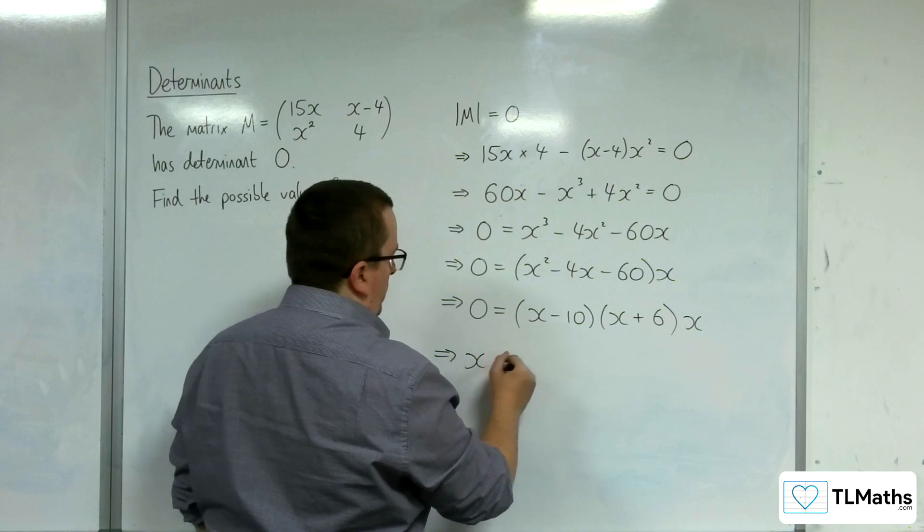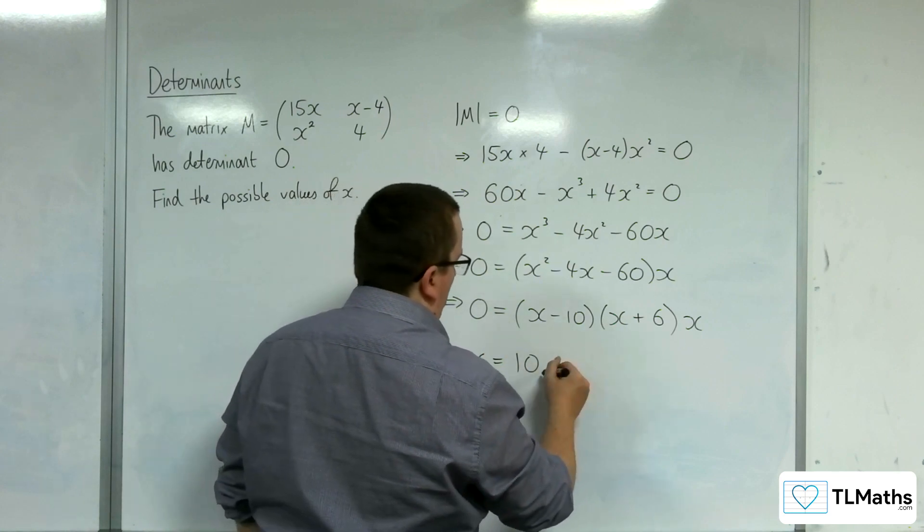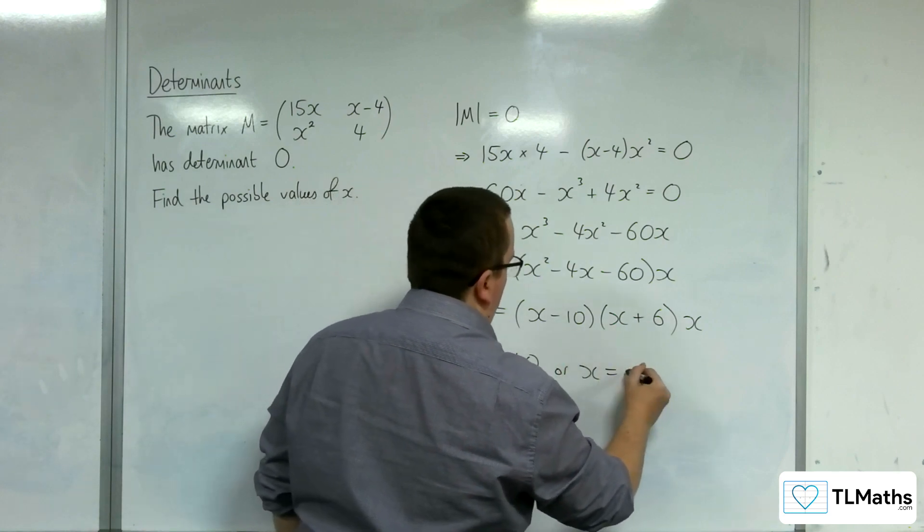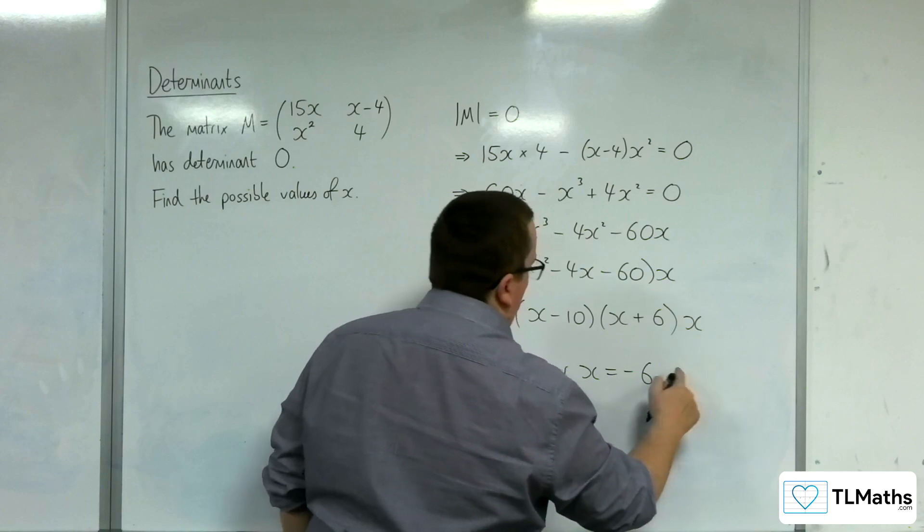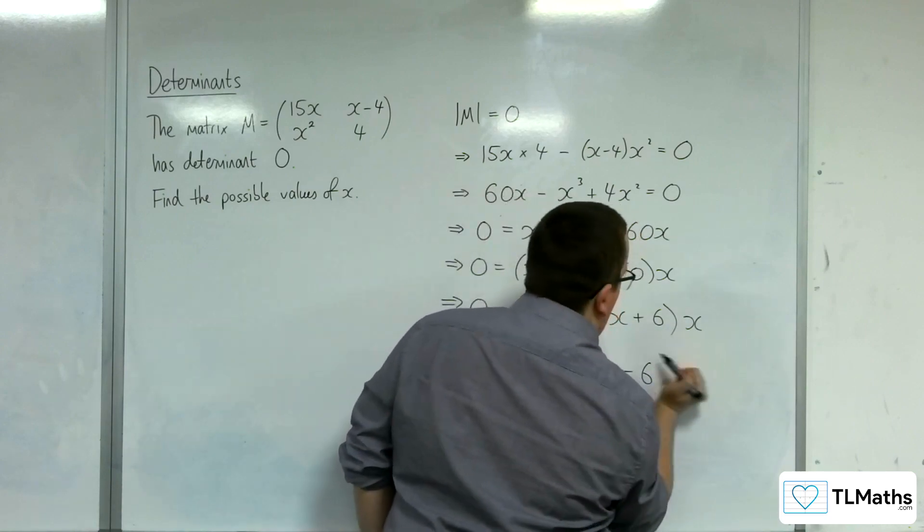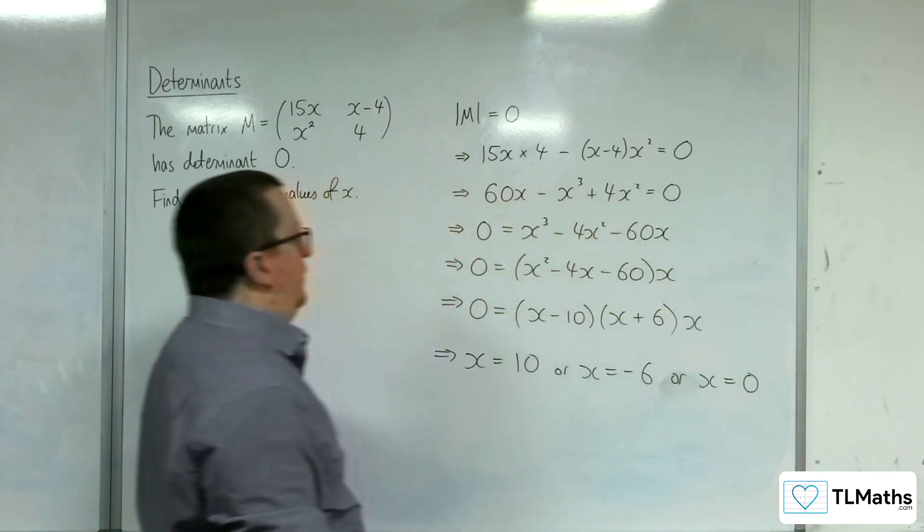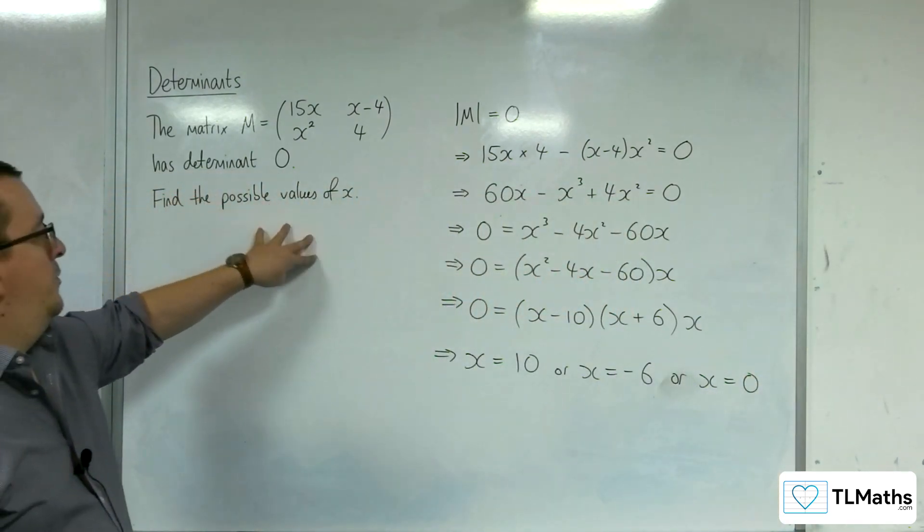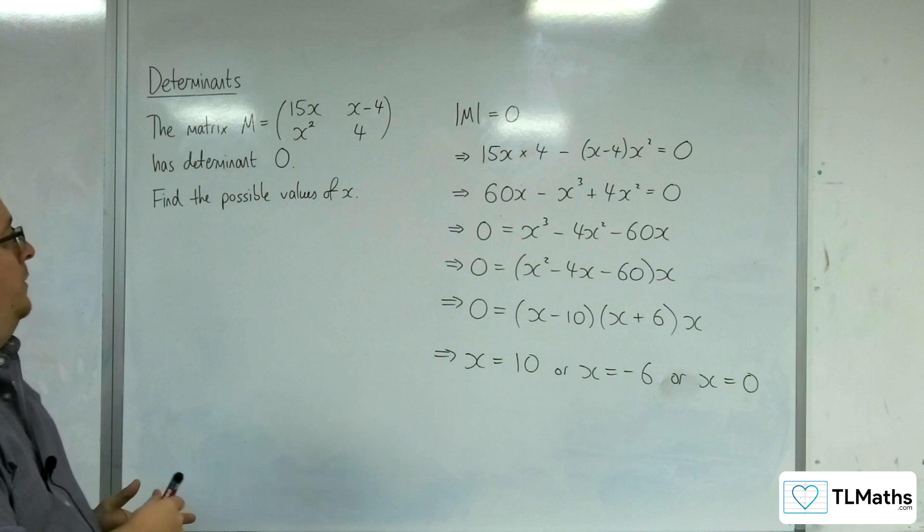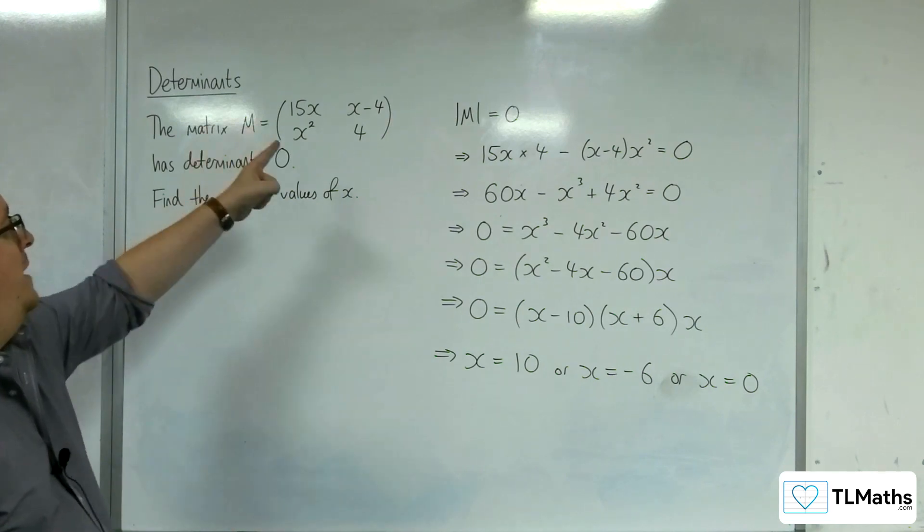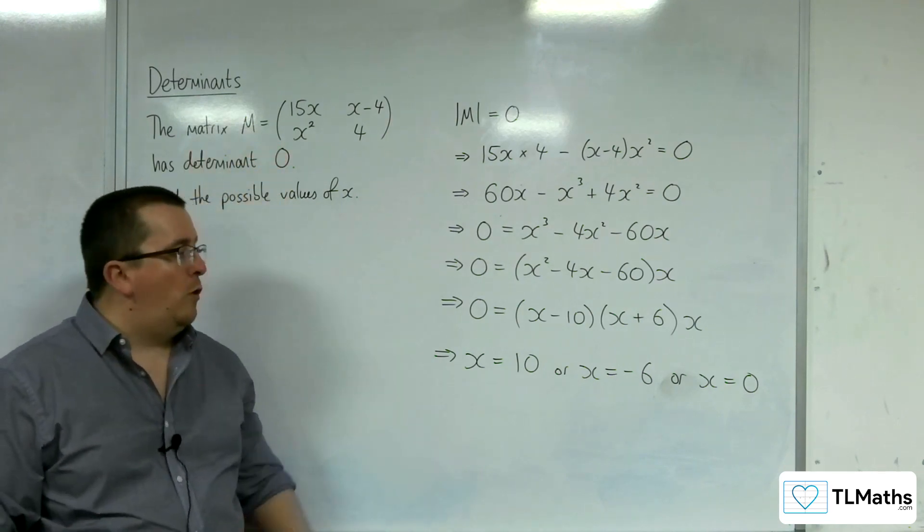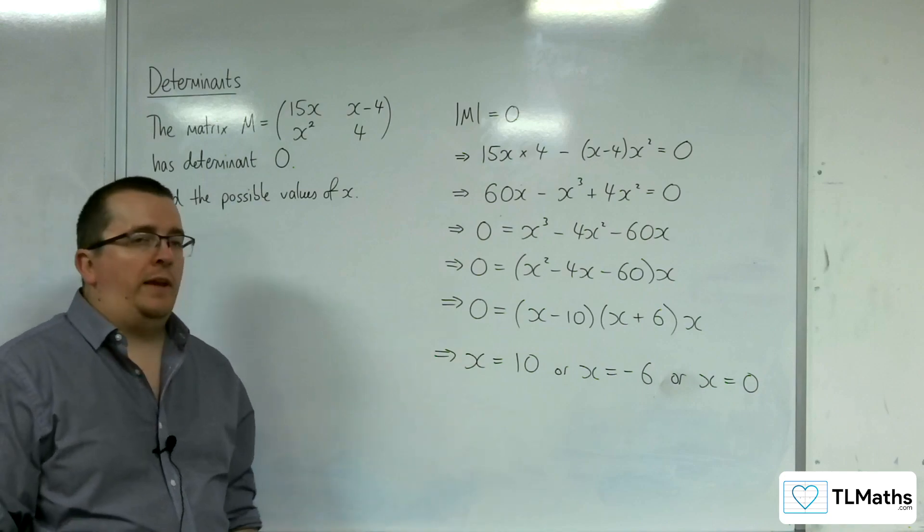So x could be 10, or x could be minus 6, or x could be 0. And so there are three possible values of x that would make that matrix have determinant 0, and they would be 10, minus 6, or 0.